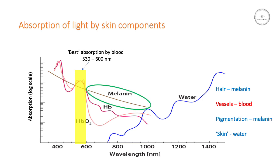If you want to treat hair, then you will target the melanin typically at this part of the spectrum — everything above around 600 nanometers. And this will, as you can see here, be preferentially absorbed in the melanin, but not so much in the hemoglobin or deoxyhemoglobin. So there's less chance of damaging blood vessels with this wavelength range.